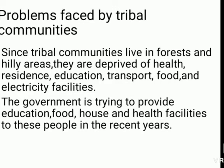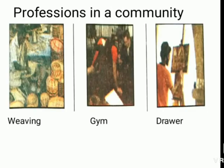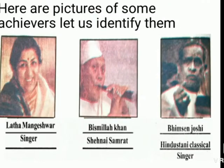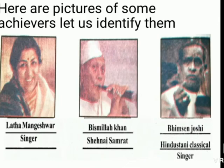The government is trying to bring tribal people to urban or more comfortable areas. Professions in the community include weaving and drawing. They can become artists — singers, doll makers, or cricketers. Let us identify some famous personalities: Lata Mangeshkar, a very great singer; Bismillah Khan, the Shehnai Samrat; and Bhimsen Joshi, a Hindustani classical singer. These are all well-known artists.